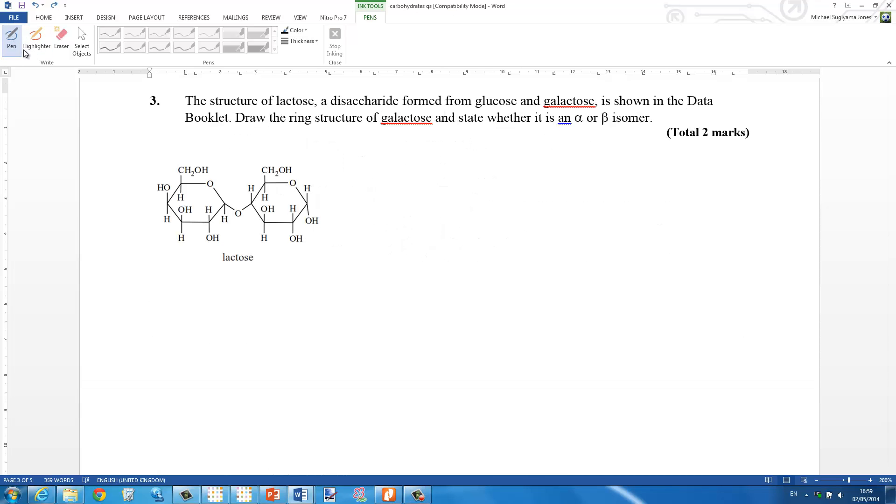In this question, you're given the structure of lactose, which I've pasted into the document there, and you have to draw the ring structure of galactose. So I'm going to draw the structure of galactose. Is it alpha or beta galactose? Well, the OH groups you can see on carbon 1 are on the opposite sides of the ring structure, so it's going to be the beta isomer.